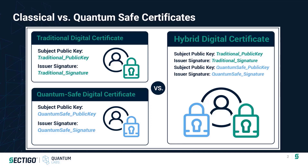For example, if a large enterprise has a server with some applications running on it that are using PKI for authentication, we can swap out the server certificate, upgrade the server to support QuantumSafe encryption, and install a hybrid digital certificate on that server. Applications can then continue to use the traditional encryption algorithms to connect to that server, but as those applications and clients are updated to use QuantumSafe certificates, they can begin using QuantumSafe crypto for authentication.